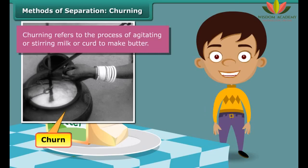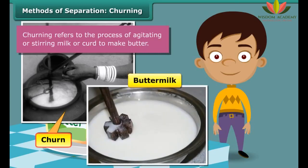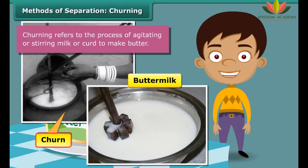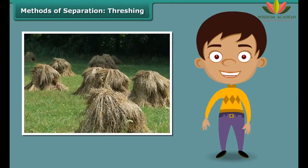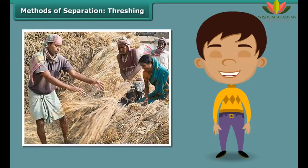This is butter. Do you know how butter is made? When milk is stirred vigorously in a churn, butter is obtained. The liquid left behind is the tasty, nutritive buttermilk that is relished by many as a refreshing summer drink. Do you see that two useful components emerge from a mixture when this method of separation is employed?